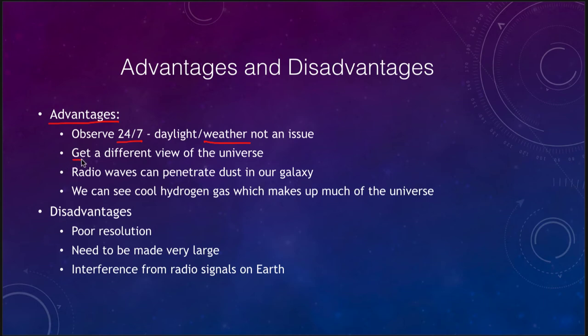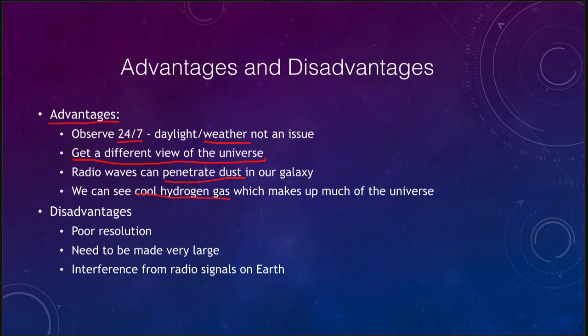Another key advantage is that you get a completely different view of the universe — you are looking at a new wavelength and able to see things you couldn't see before. For example, radio waves penetrate dust, allowing Carl Jansky to detect radio emission from the center of our galaxy, which we cannot see in visible light because there is too much dust in the way. We can also detect cool hydrogen gas that gives off no visible light but does give off radio wavelengths, so it can be detected by radio telescopes even though it cannot be seen by visible telescopes.